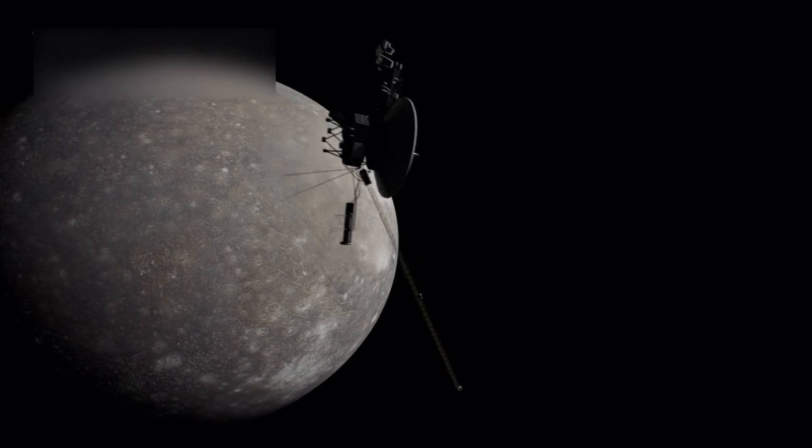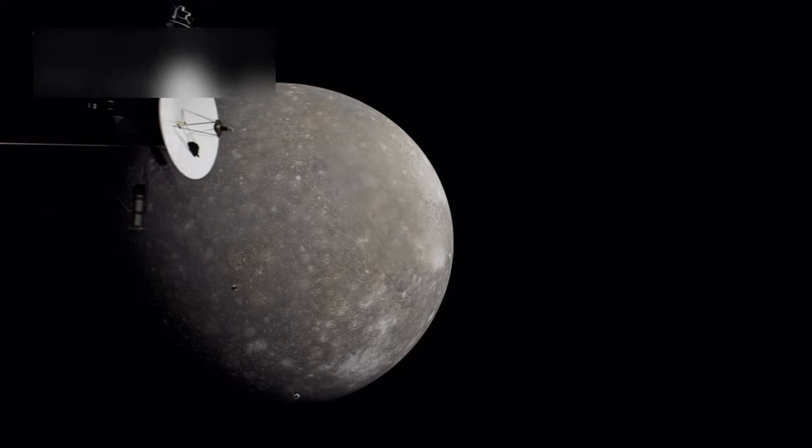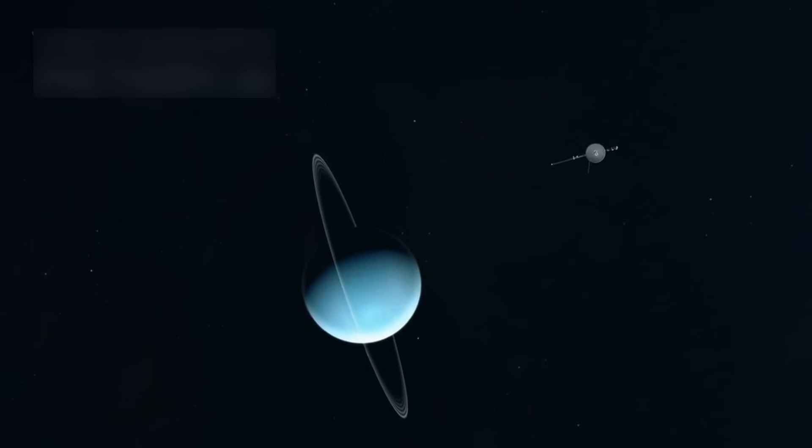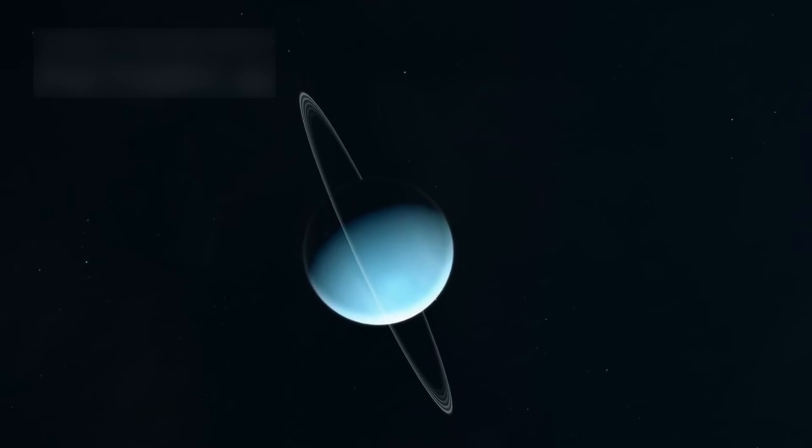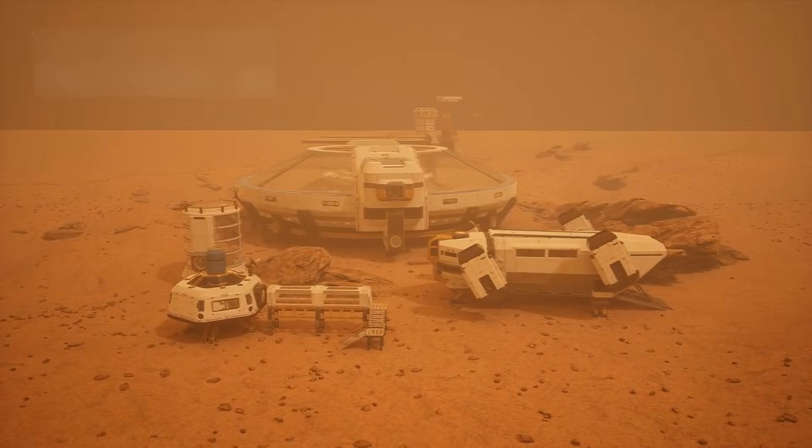Every transmission Voyager 1 sends is a message from the edge of the known universe. It travels in silence, powered by a fading generator and guided by an ancient computer, yet its impact is loud and clear. This is what human determination looks like when it's pointed at the stars. Subscribe to our channel and thanks for watching.